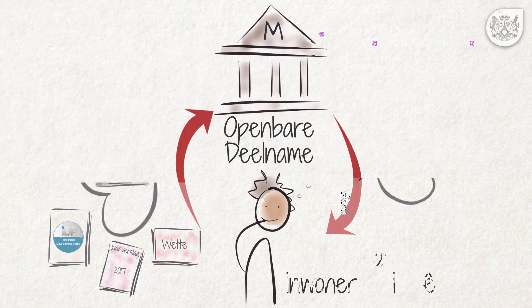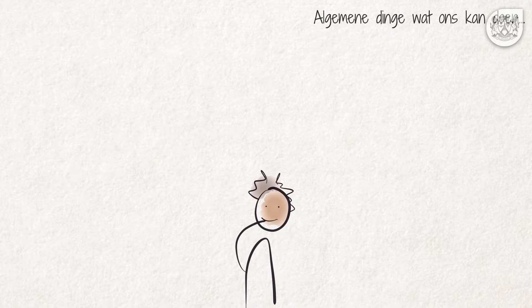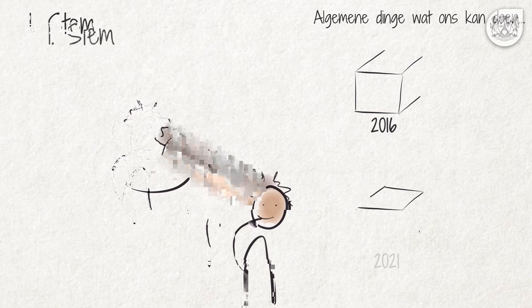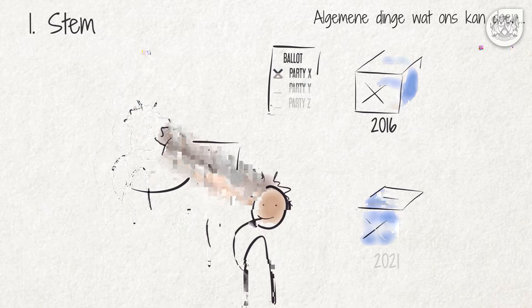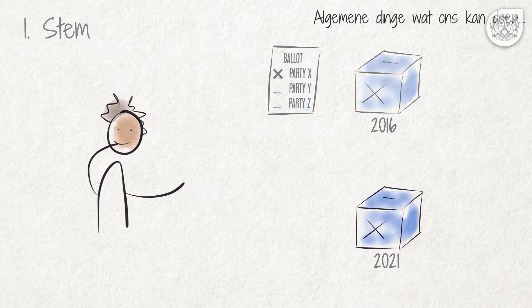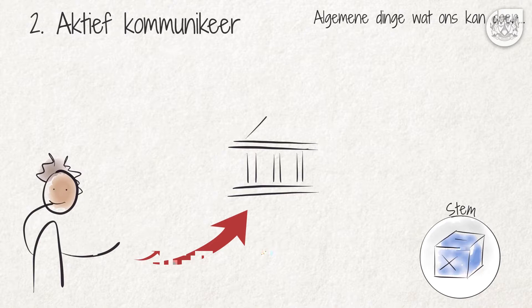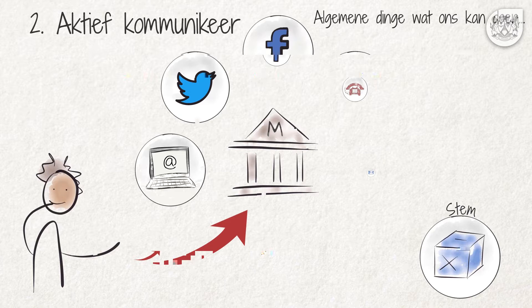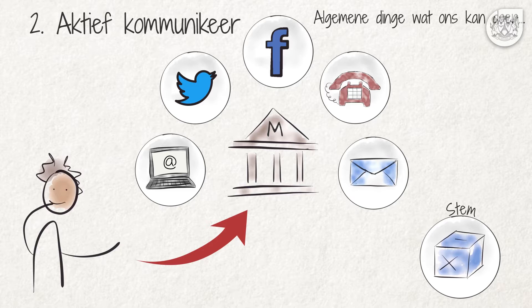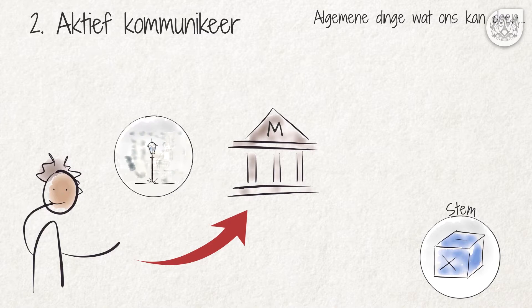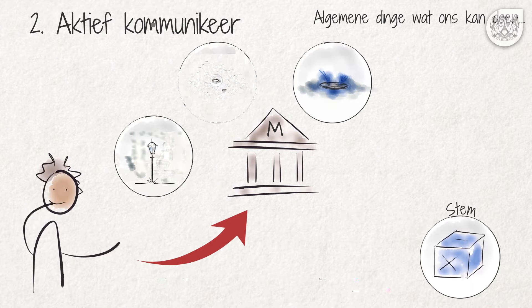Daar is ook algemene goed wat ons kan en moet doen om reagerende burgers te wees. Eerstens, indien die munisipale raadslede nie presteer nie of versuim om hul verpligtinge na te kom, kan ons tydens die volgende munisipale verkiesing vir 'n ander persoon of politieke party stem. Tweedens, moet ons aktief met ons munisipaliteit kommunikeer deur byvoorbeeld e-poste, die sosiale media, telefonies of per brief om so ons werklike behoeftes, bekommernisse en voorkeure bekend te maak. So moet ons byvoorbeeld die munisipaliteit inlig wanneer straatligte nie brand nie, daar slaggate in paaie is, 'n waterpyp wat gebars het, of as daar onwettige kragaansluitings is en dan vra dat dit reggemaak word.